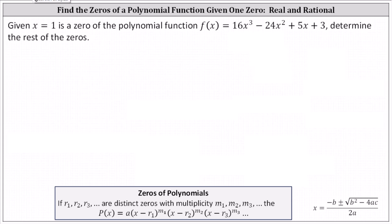Given x equals one is a zero of the polynomial function f of x equals 16x cubed minus 24x squared plus 5x plus 3, determine the rest of the zeros.